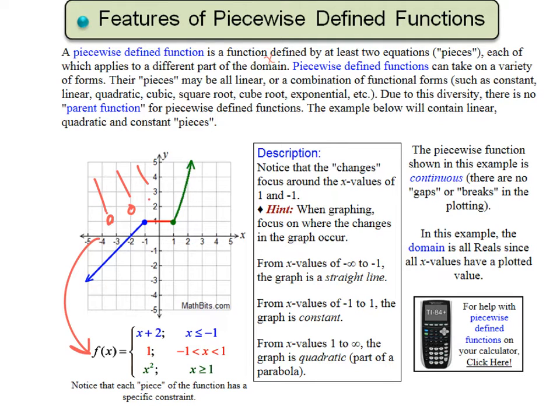So for instance, this graph we would say is f(x) equals x plus 2 for x is less than or equal to negative 1. It's equal to 1 from negative 1 to 1. And it's equal to x squared for all values of x greater than or equal to 1. The piecewise function shown in this example is continuous, meaning that there are no gaps or breaks in the plotting. It's all connected. And in this example the domain is all real numbers since all x values have a plotted value.